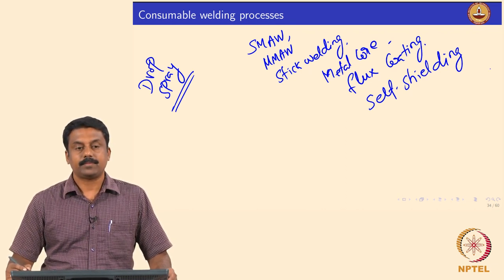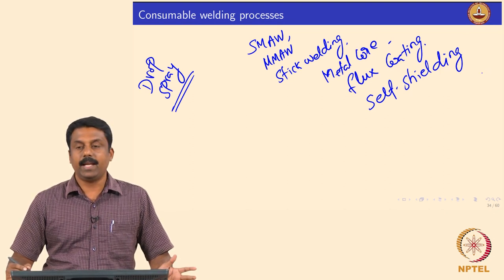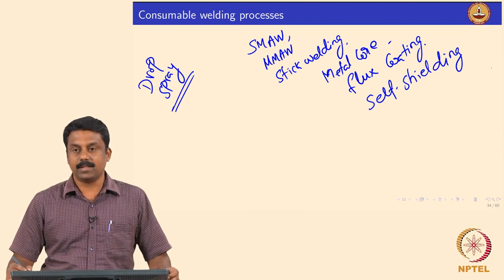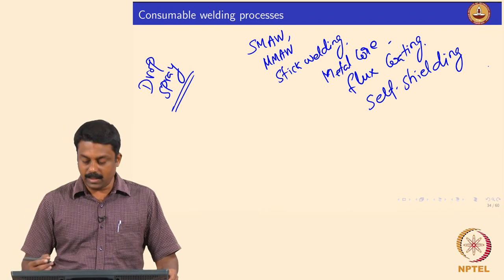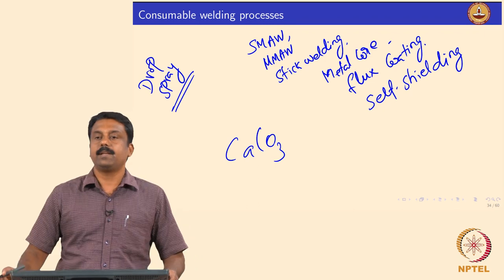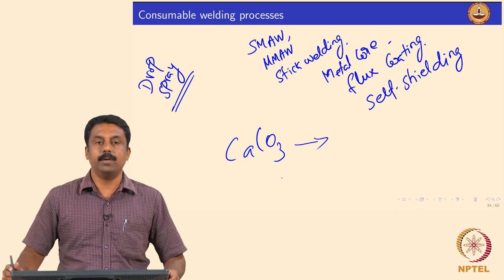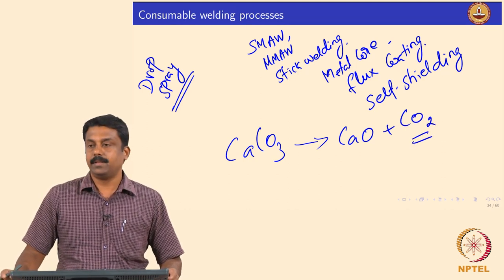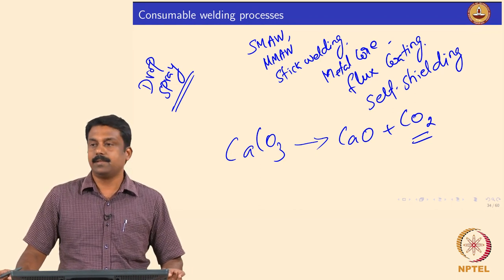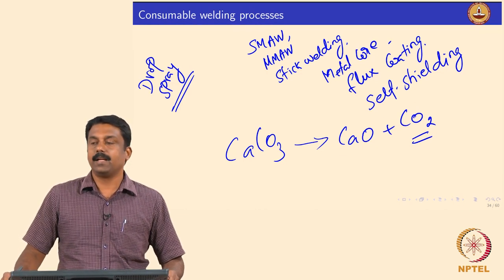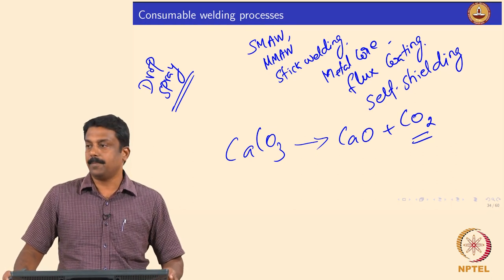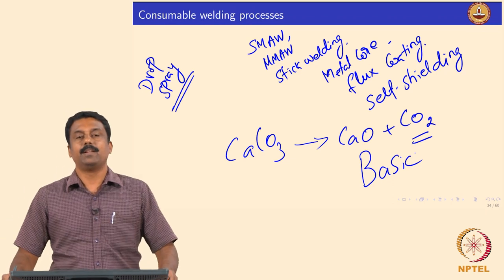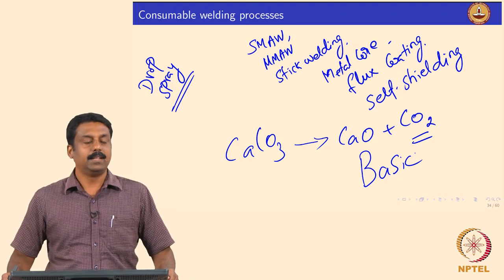It is called self-shielding because the shielding gas is generated by the decomposition of the flux. Generally, the flux contains elements that dissociate or decompose to generate gases. One example is calcium carbonate based fluxes — calcium carbonate when heated decomposes into calcium oxide plus carbon dioxide. This carbon dioxide generates the required shielding and arcing gas for striking an arc and protecting the weld pool. Fluxes with a majority of calcium carbonate are known as basic fluxes, similar to the basic slags used in steel making.